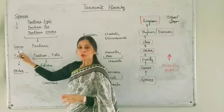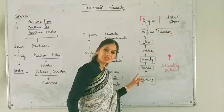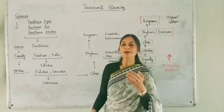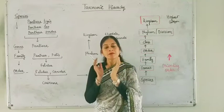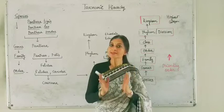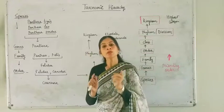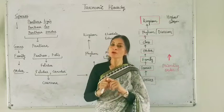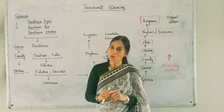That's why they have a common genus. Genus is a group of related species. For example, tiger, lion, and leopard are related species, and they are placed in the genus Panthera.